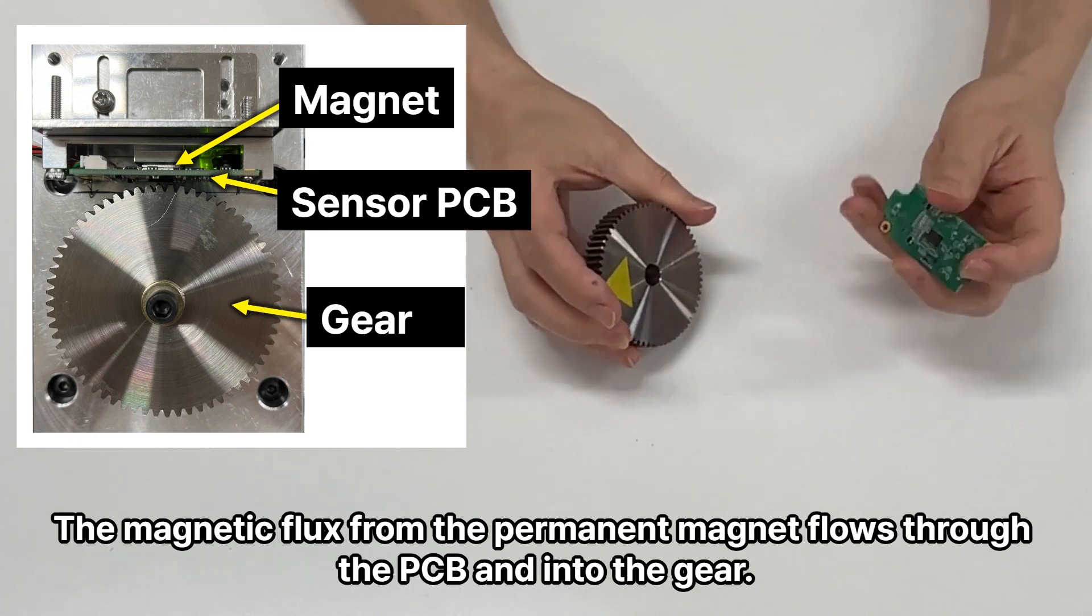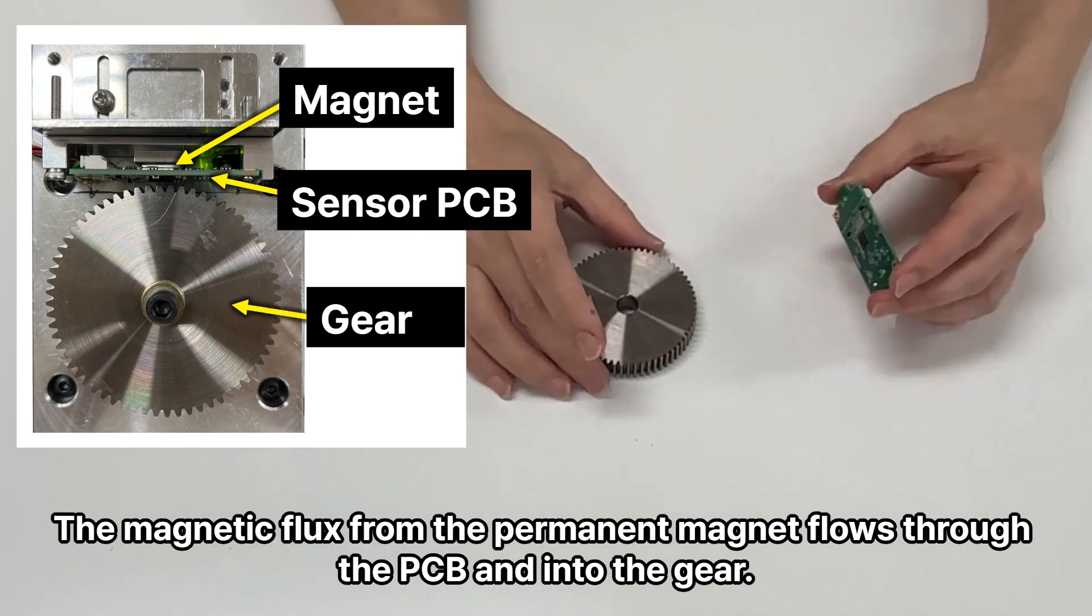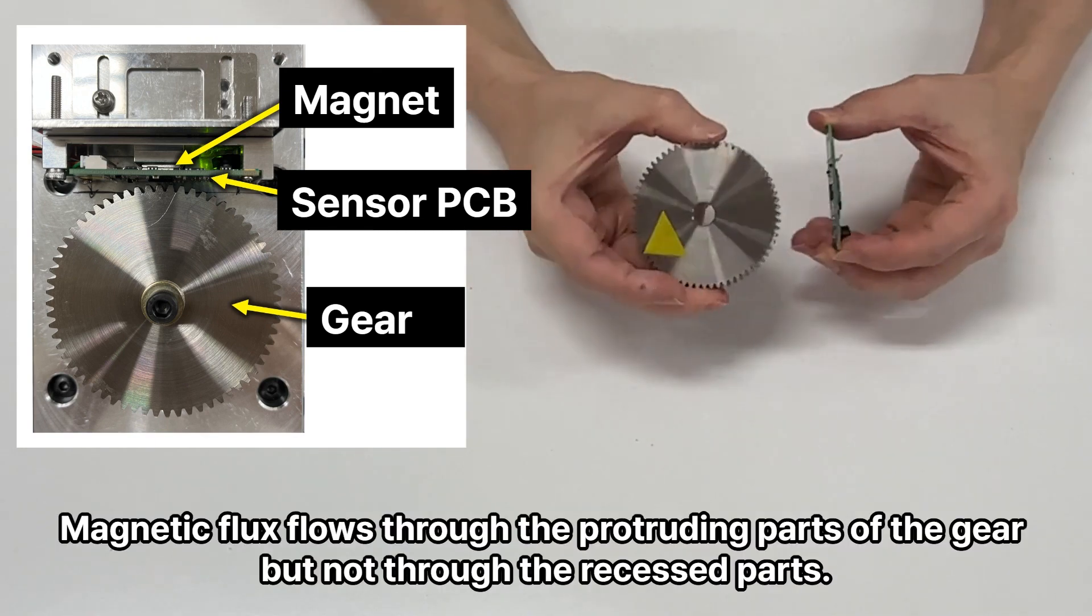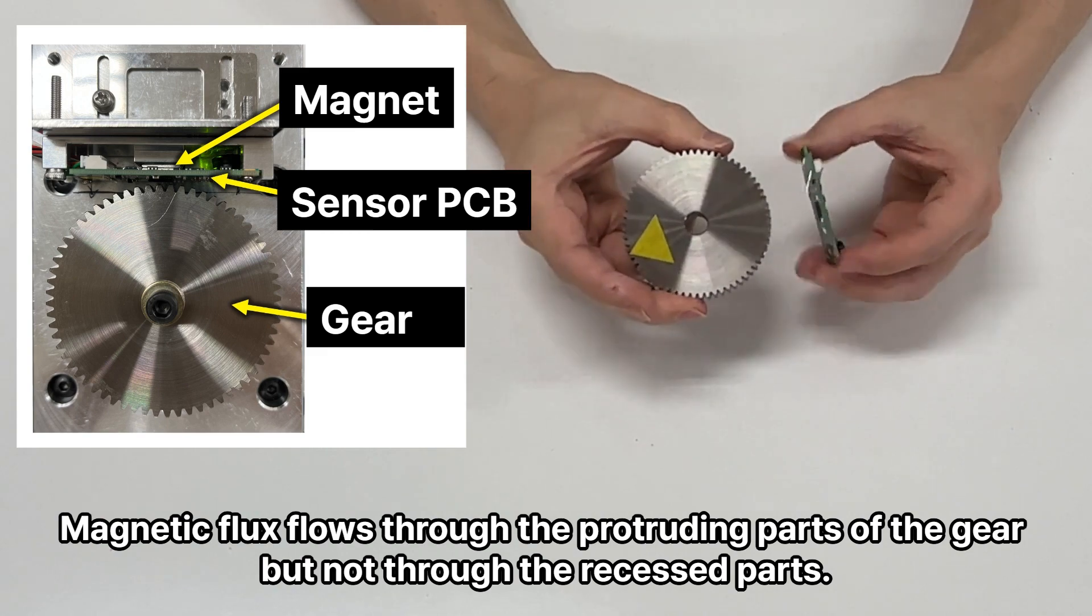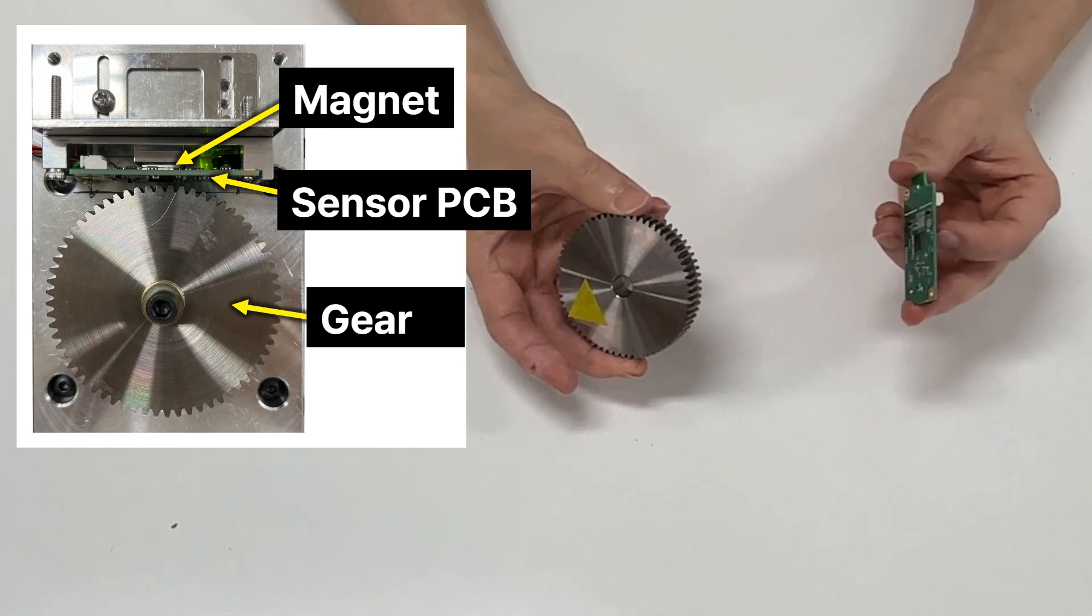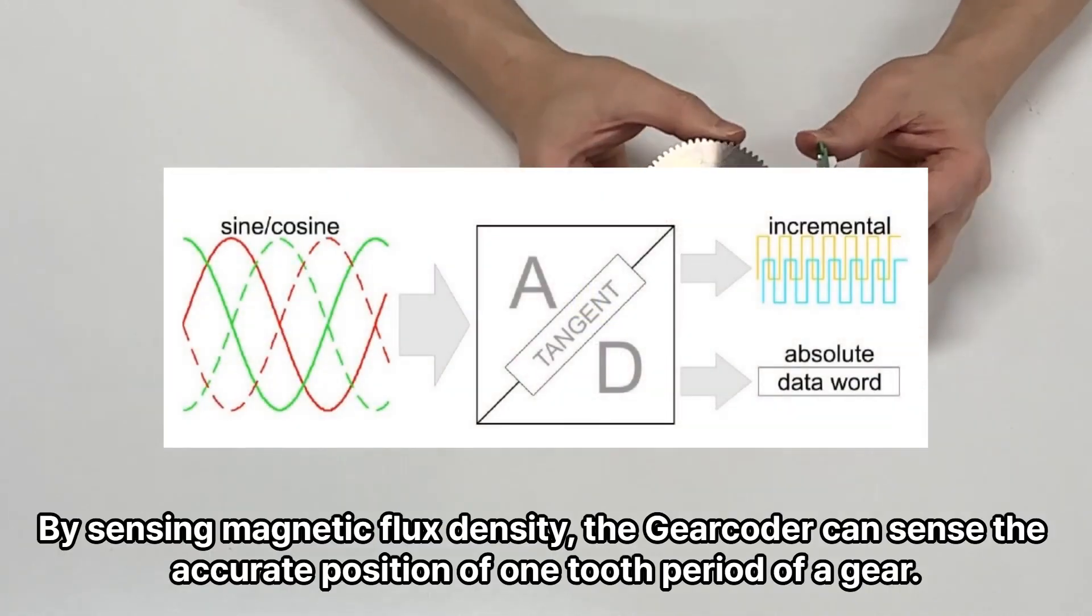The magnetic flux from the permanent magnet flows through the PCB and into the gear. Magnetic flux flows through the protruding parts of the gear, but not through the recessed parts. By sensing magnetic flux density, the gearcoder can sense the accurate position of one tooth period of a gear.